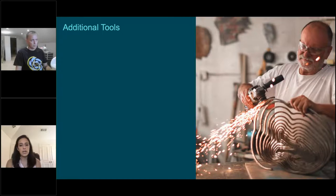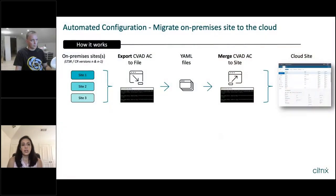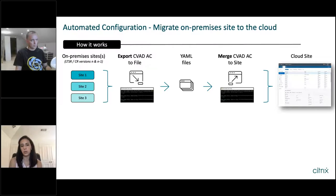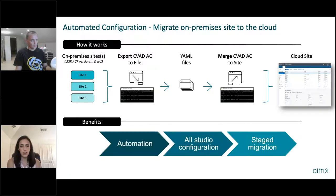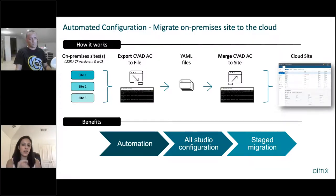Now we're going to talk about some additional tools and functionality that you can utilize in order to create this DaaS for business continuity environment and make your lives easier. First I'm going to talk about the Automated Configuration Tool, which also went GA this year. This tool is meant to help with migration from on-premises sites to the cloud. I know when I was in the field, a lot of customers just didn't have the time or didn't want to rebuild a whole new environment from scratch when they already had configuration policies and settings that worked on-prem. That's essentially why we created the Automated Configuration Tool.